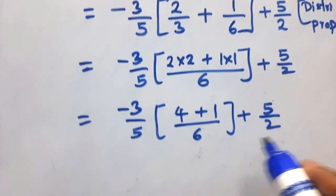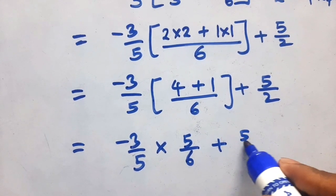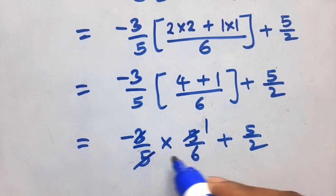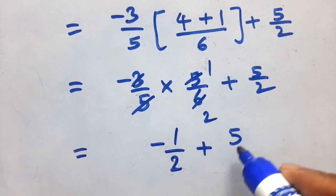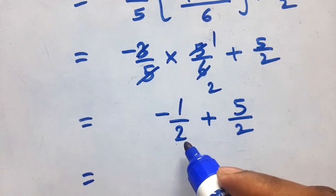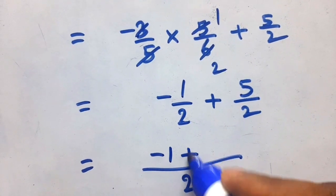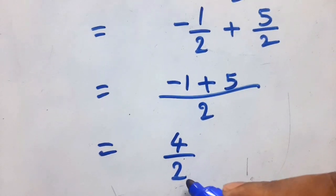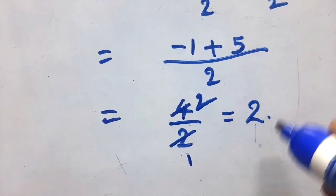So we have minus 3 by 5 into 5 by 6, plus 5 by 2. Here 5 divides 5 one time and 3 divides 6 two times, so the remaining value is minus 1 by 2, plus 5 by 2. Since denominators are the same, LCM is 2. Numerator is minus 1 plus 5 equals 4. So 4 by 2 equals 2. This is the final answer.